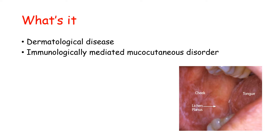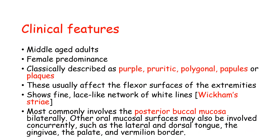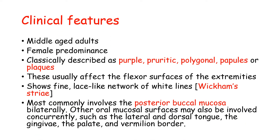For clinical features, lichen planus mostly affects adults of middle age and shows a female predominance. Its classic signs are the 5 P's: purple, pruritic, polygonal papules or plaques. These usually affect the flexor surfaces of the extremities, and the areas show a fine lace-like network of white lines called Wickham's striae.